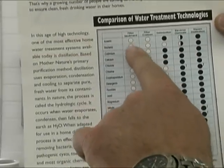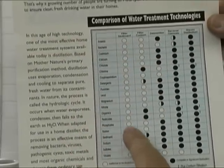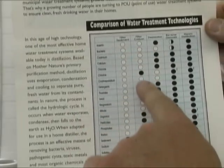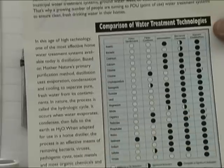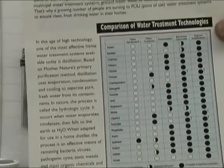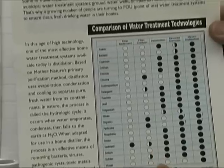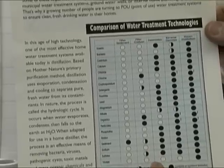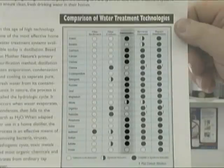Sediment filters take out sediment. Carbon filters take out chlorine, and they handle a little bit of detergent, a few pesticides and phosphates, some sediment, and sulfates. Deionization is good for a few more things.